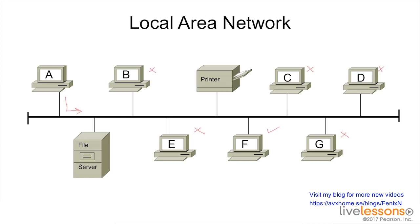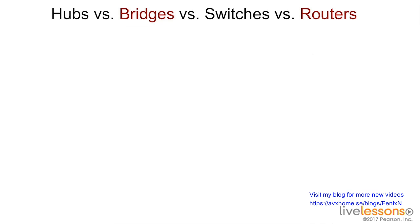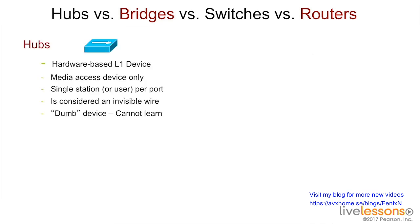So let's examine some network devices that can help us create an optimized network. The first device we want to define is a hub. A hub is a hardware-based layer one device — it is basically a repeater. Devices attach to the hub and as signals come in, they are repeated back out the other side. It's a dumb device and it can't learn.